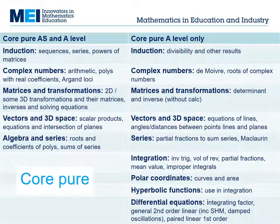The A Level CorePure content was chosen for all specs by Alcab. We have added one small topic: vector products. This is so helpful when answering questions on, say, the distance between skew lines. All students have to know is that a vector product is a vector perpendicular to two given vectors. They can use a calculator to find it, or the formula which will be given.